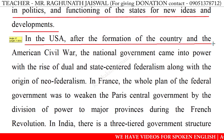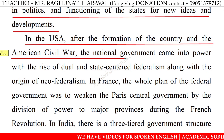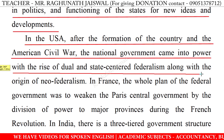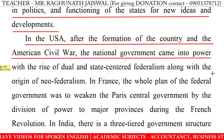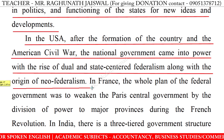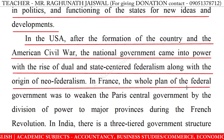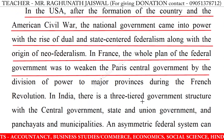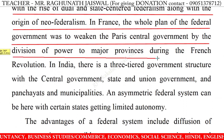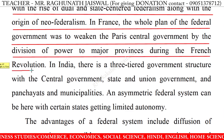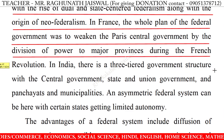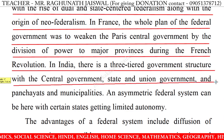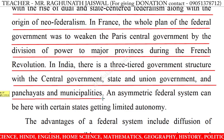In the USA, after the formation of the country and the American Civil War, the national government came into power with the rise of dual and state-centered federalism, along with the origin of neo-federalism. In France, the whole plan of the federalism government was to weaken the Paris central government by the division of power to major provinces during the French Revolution. In India, there is a three-tiered government structure with the central government, state and union government, and panchayats and municipalities.